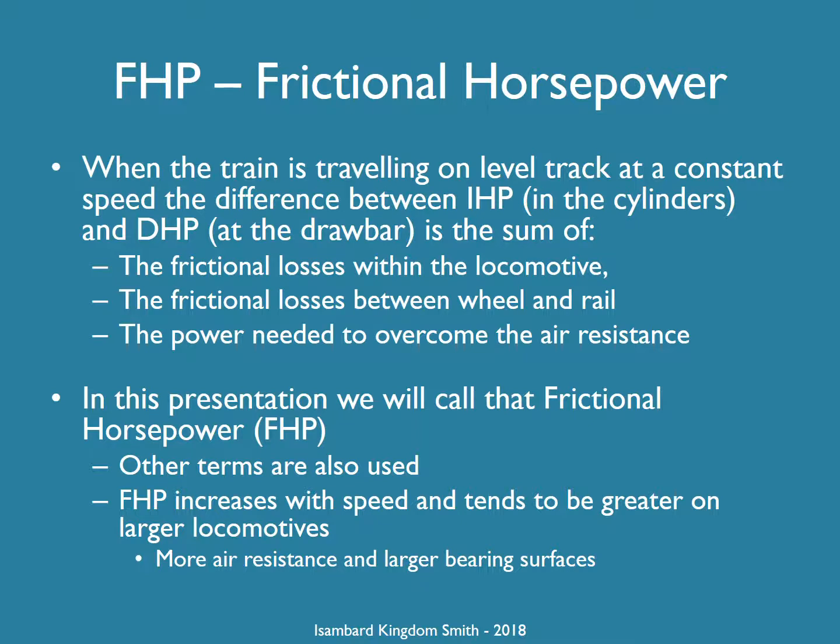Between the piston and the wheels there's going to be friction. With all the wheels, they will have bearings on the locomotive and tender, so there'll be friction. There's friction between the wheel and the rail. And then there's air friction — the locomotive is a vehicle and it needs power to overcome its own air resistance. I'm going to call that frictional horsepower, although you'll find in other places people use different terms. The faster you go, the higher frictional horsepower becomes, and generally the larger the locomotive the higher the frictional horsepower.